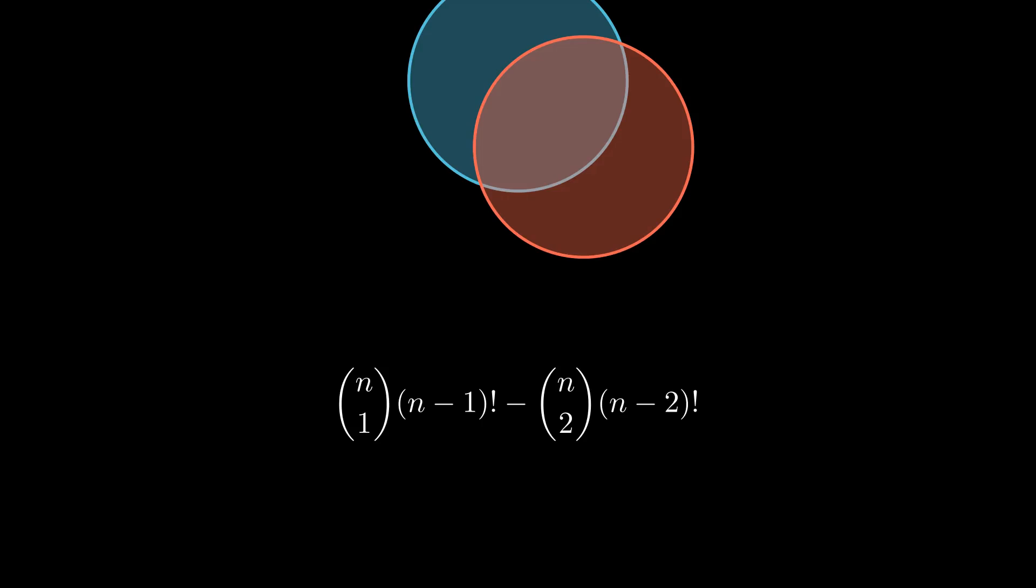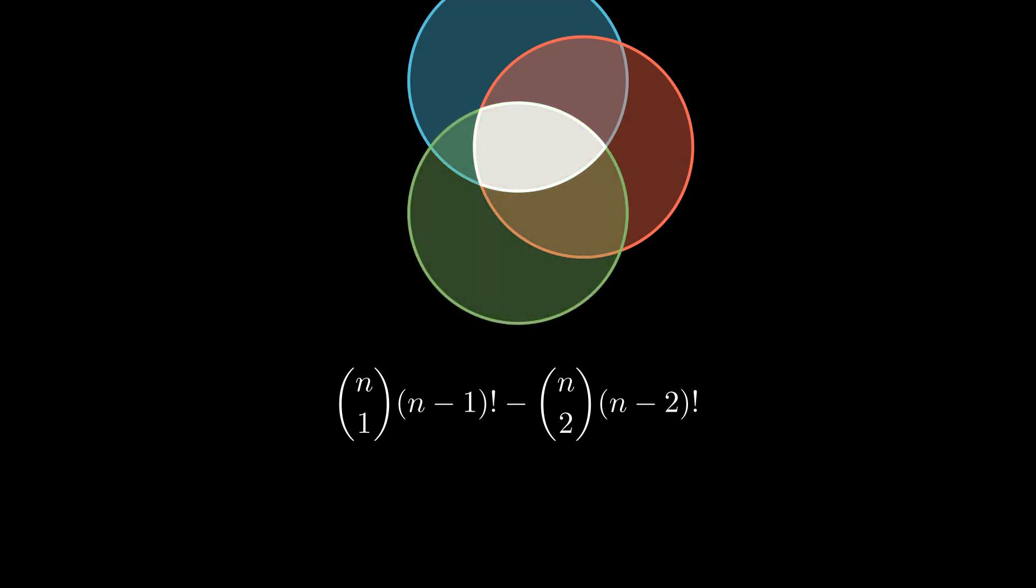And what would that number be? As before, we have a two combination of ways to select the two colors from n, and that comes with all the possible permutations of the remaining presents. You already guessed that considering yet another position comes with another complication.